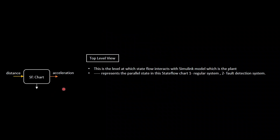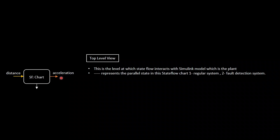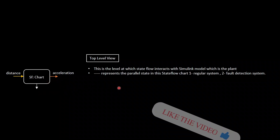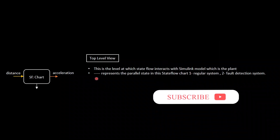When we create a state flow chart we take the distance into consideration. The top-level view of the state chart looks like this: acceleration is given to the plant as input — how much it should accelerate. The plant model is the vehicle design that takes acceleration as input. D is the distance measured from the sensor, also coming from the plant, and it is communicated to the state flow chart as a distance measurement.